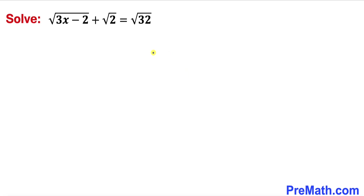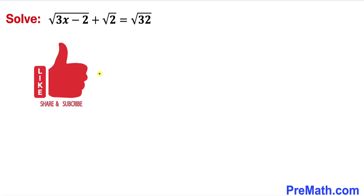Welcome to pre-math. In this video we are going to solve the given radical equation: square root of (3x minus 2) plus square root of 2 equals square root of 32. Please don't forget to give a thumbs up and subscribe.